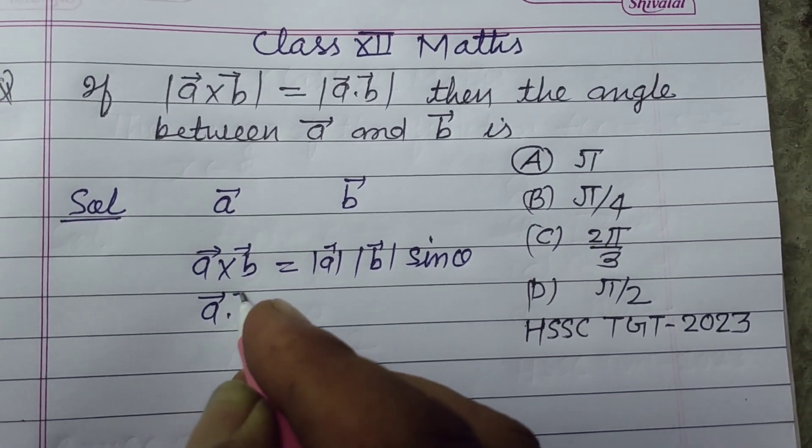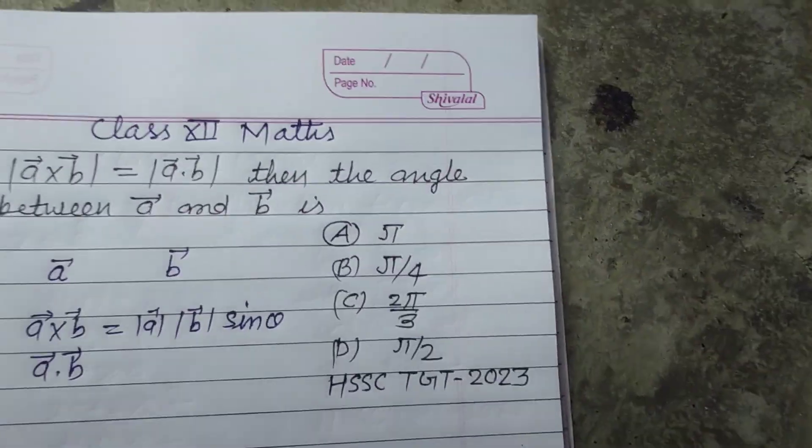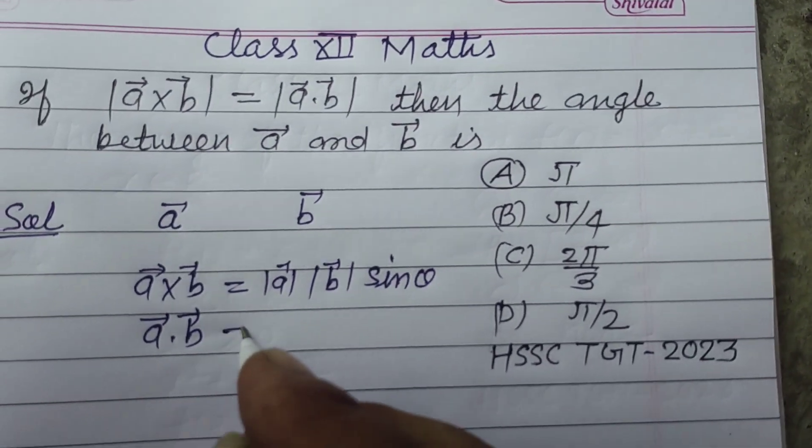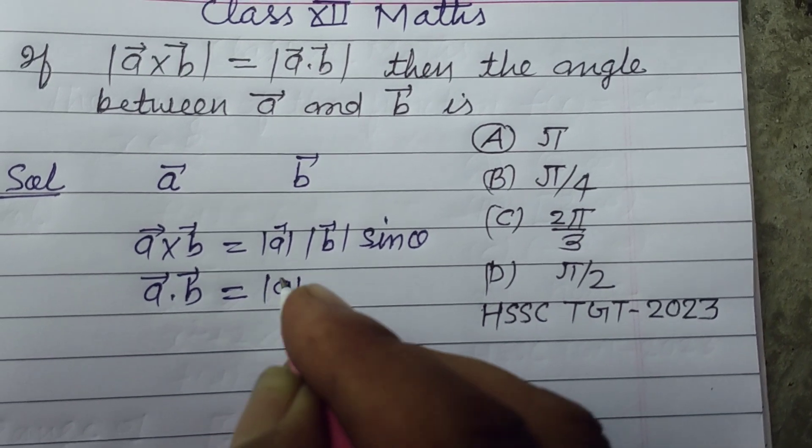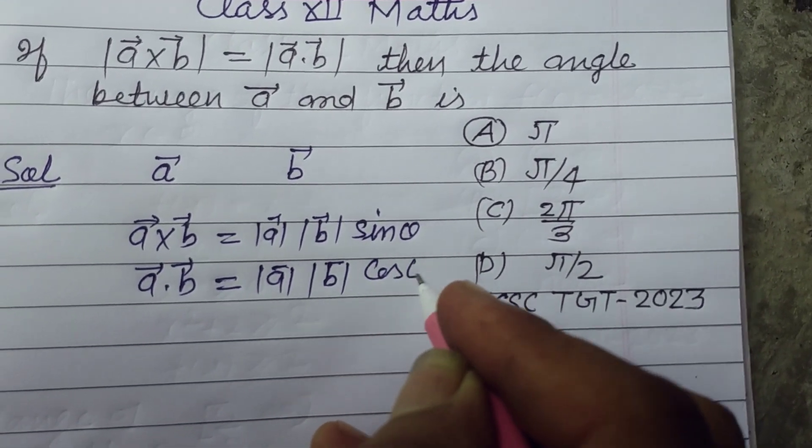And dot product between these two vectors is equal to magnitude of A, magnitude of vector B, cos theta.